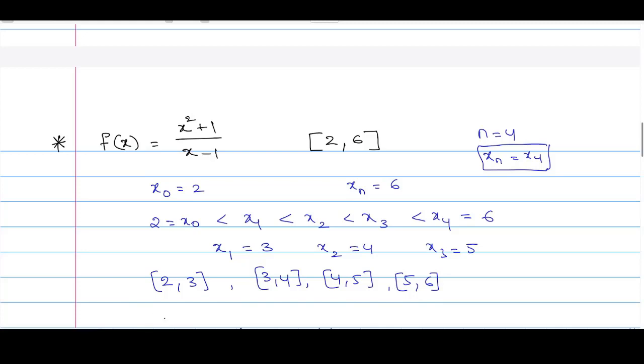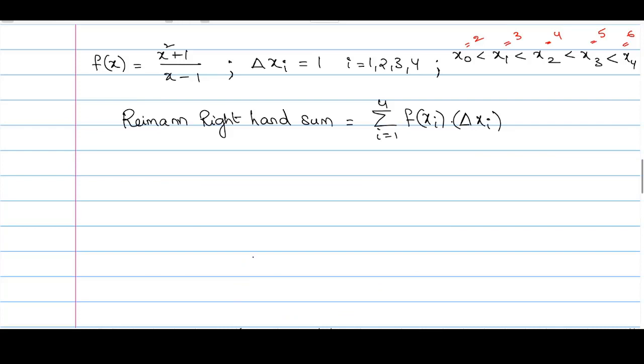Also, if you observe here, the length of each interval is 1. That is delta x i, which is x i minus x i minus 1, is 1 for all the intervals, for i equals 1, 2, 3, 4.